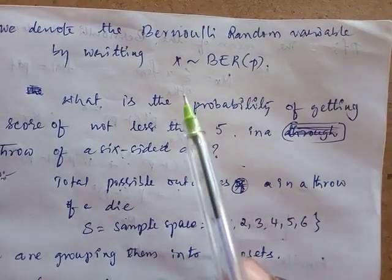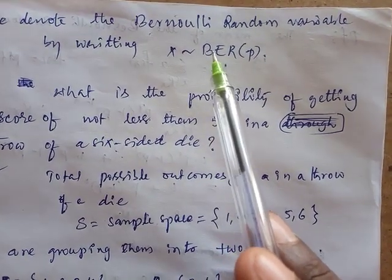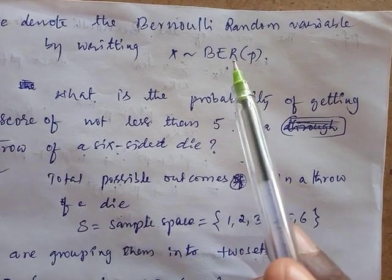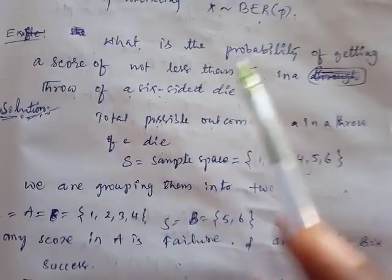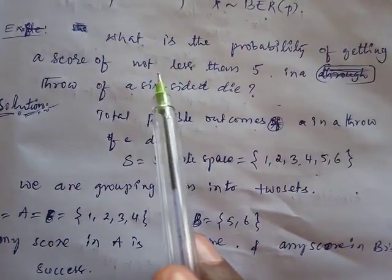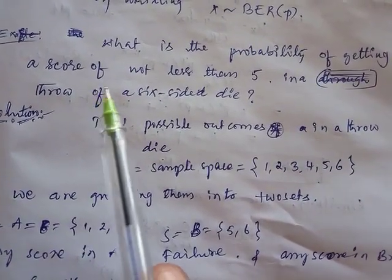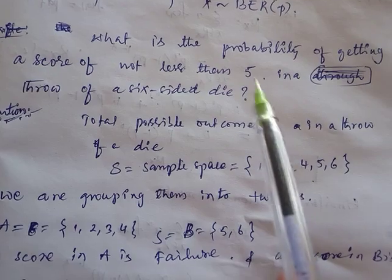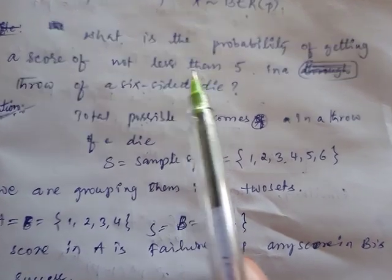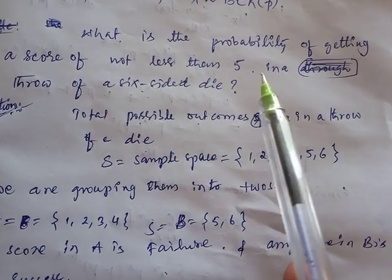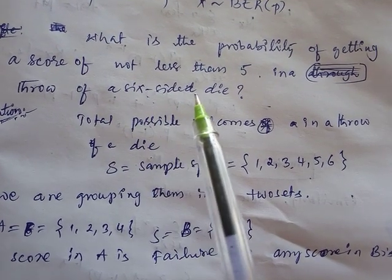We denote the Bernoulli random variable by writing X ~ Bernoulli(p), with parameter p. Now let's look at an example: what is the probability of getting a score of not less than 5 in a throw of a six-sided die?